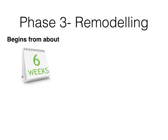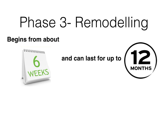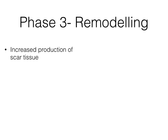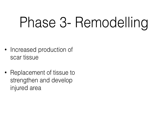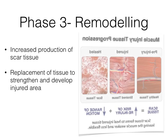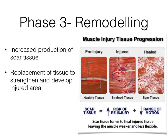Phase 3 is remodelling. The remodelling phase lasts from about six weeks and can last up to 12 months or more, depending on the severity of the injury. It is characterised by increased production of scar tissue and replacement of tissue to develop and strengthen the injured area. While scar tissue is well formed in this phase, it is very inflexible. This increased scar tissue means a greater risk of re-injury due to lack of flexibility and elasticity and decreased range of motion. Therefore, rehabilitation — particularly progressive mobilisation and stretching — becomes very important during this phase.